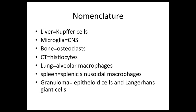Macrophages in the brain and spinal cord — essentially in the CNS — are called microglial cells. The major function of these is to remove all damaged neurons.